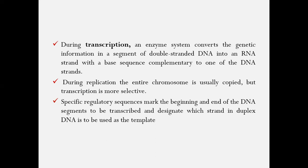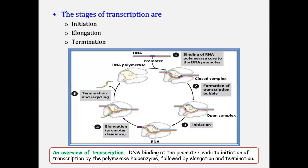A specific sequence identifies a site on DNA called the promoter site, which starts transcription. When transcription ends, there is a specific sequence called the terminator that stops the transcription process. Transcription has three steps: first is initiation, second is elongation, third is termination.